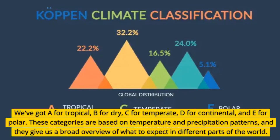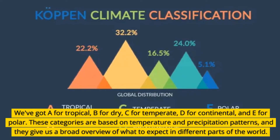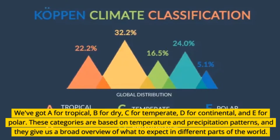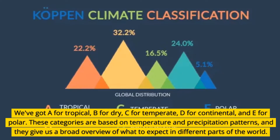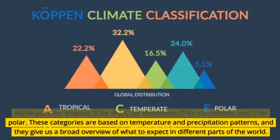We've got A for tropical, B for dry, C for temperate, D for continental, and E for polar. These categories are based on temperature and precipitation patterns, and they give us a broad overview of what to expect in different parts of the world.